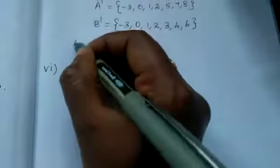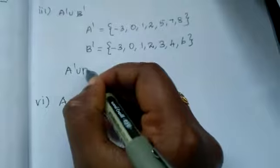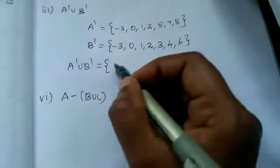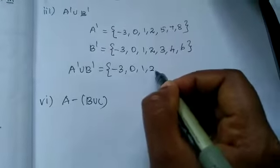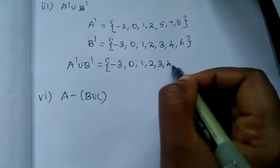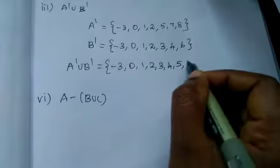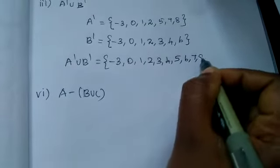Now we want to find what A dash union B dash means. It means writing all the elements in the set. Now tell me: minus 3, 0, 1, 2, 3, 4, 5, 6, 7, 8.